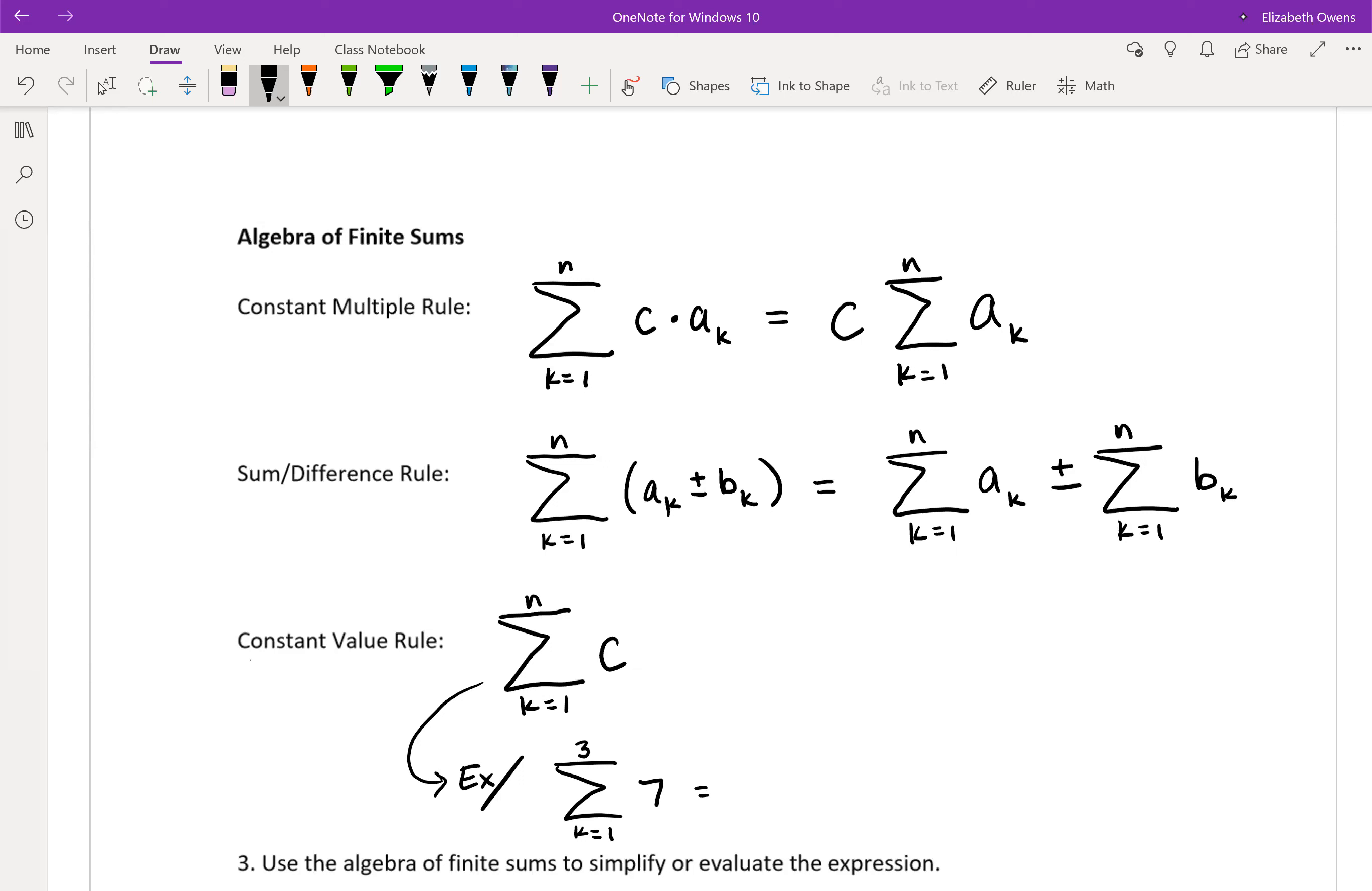the term is 7, plus k equals 2, the term is 7, and then k equals 3, the term is 7.